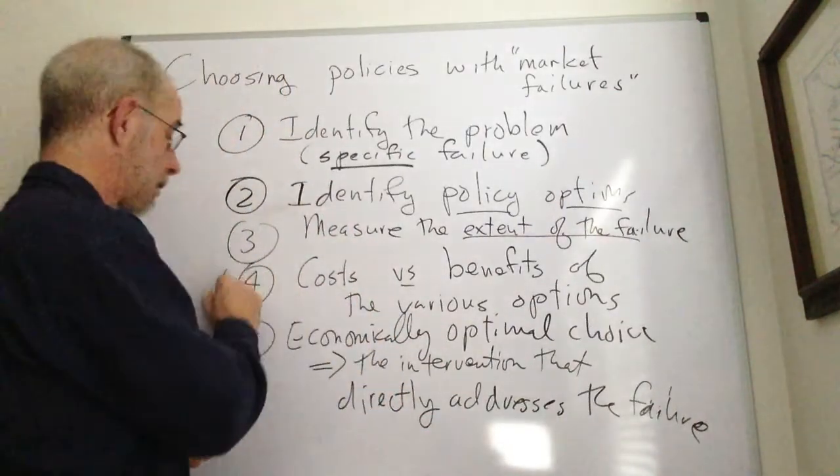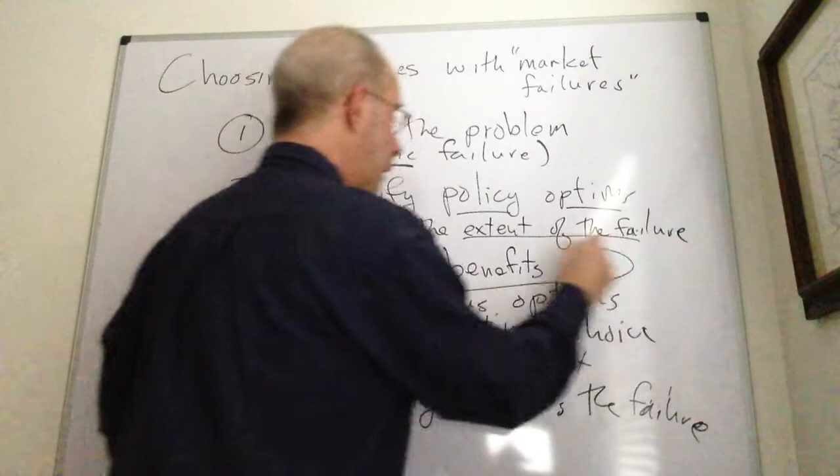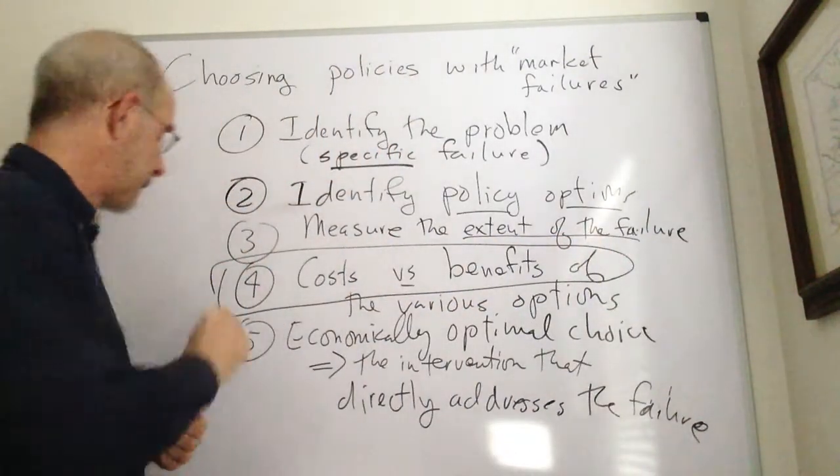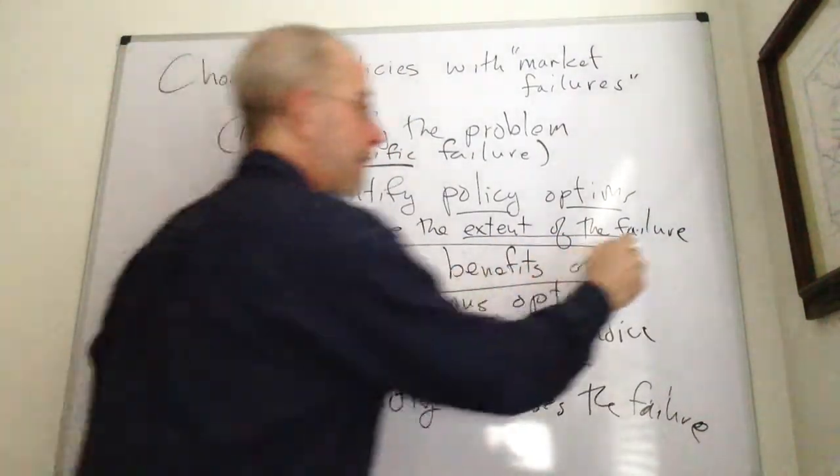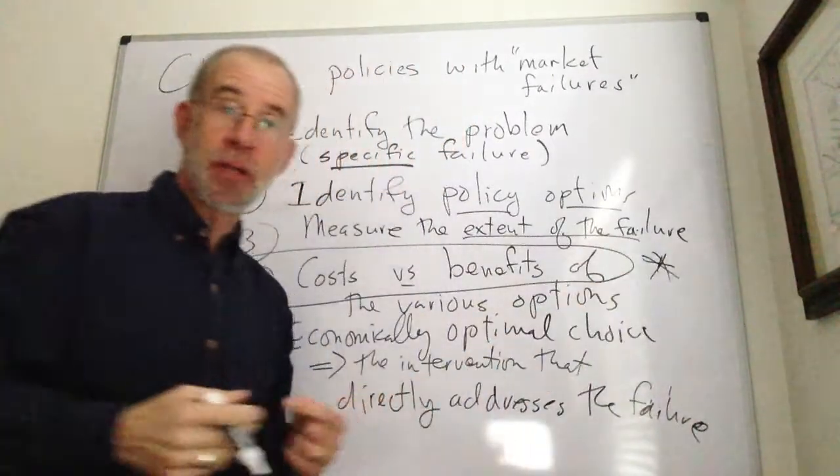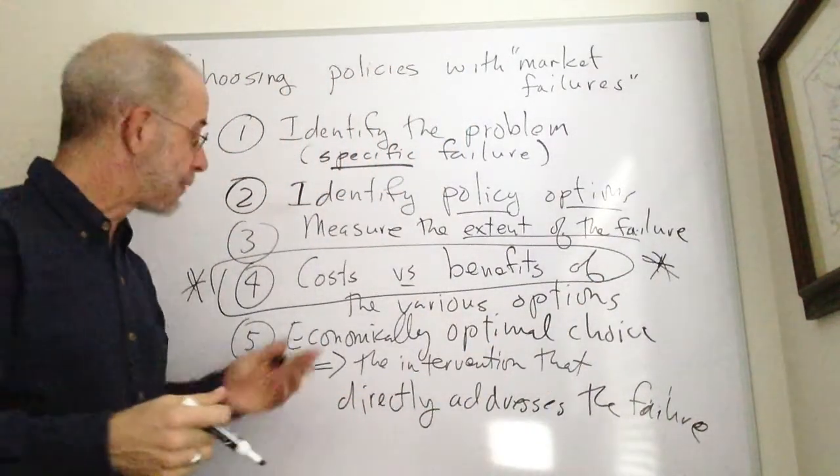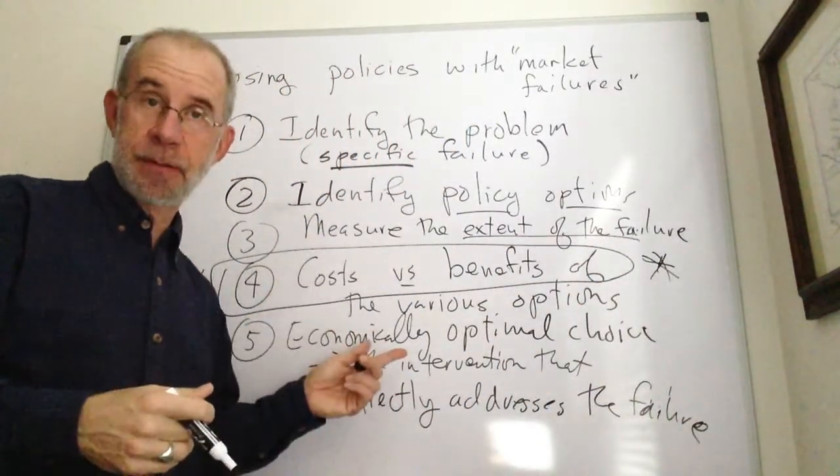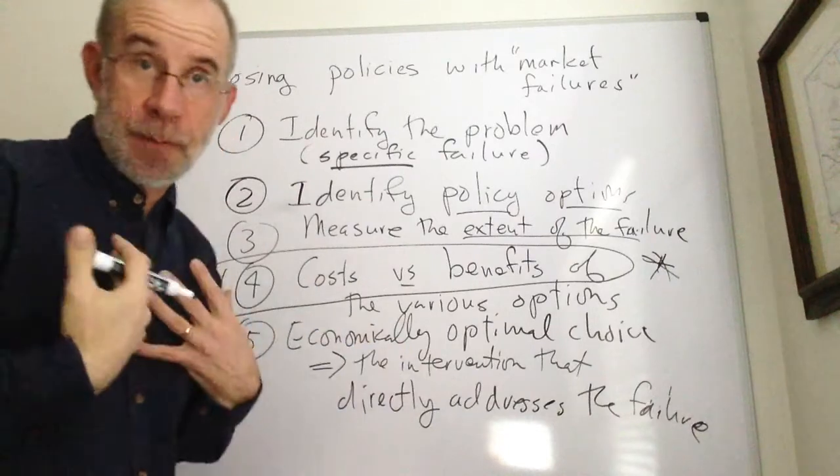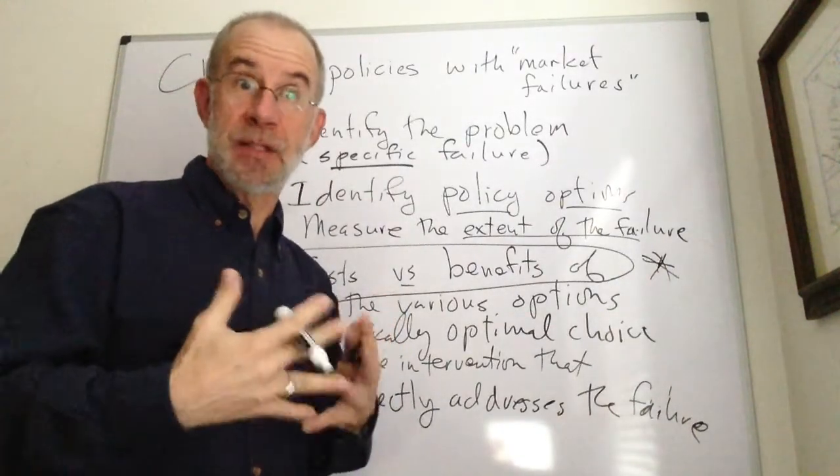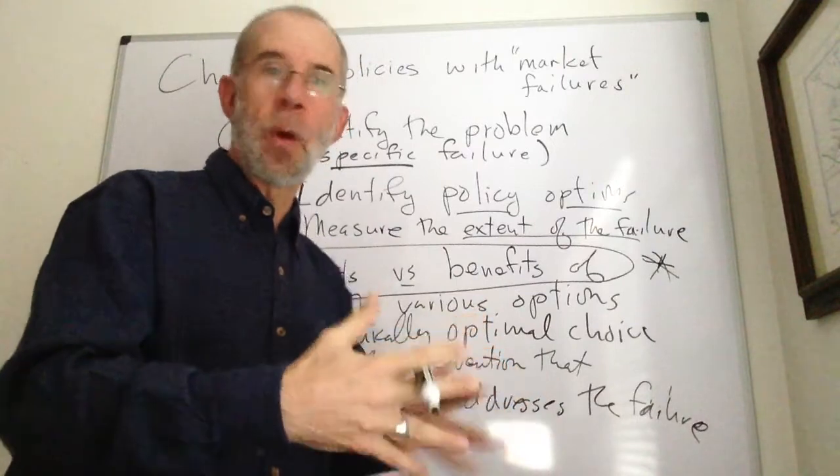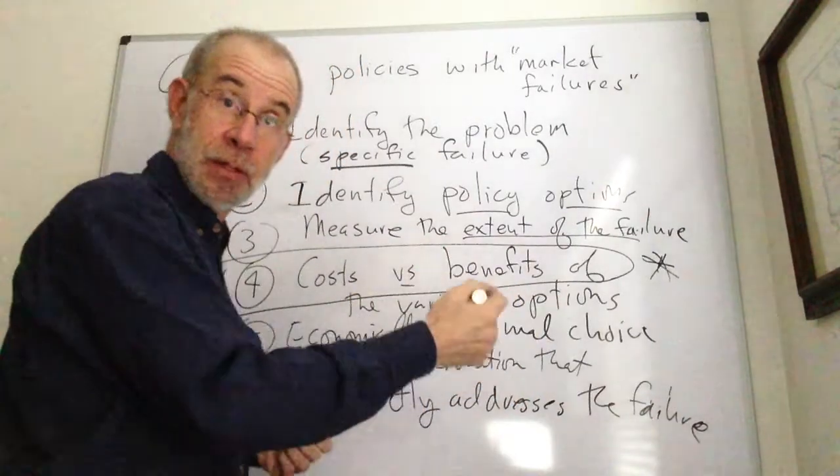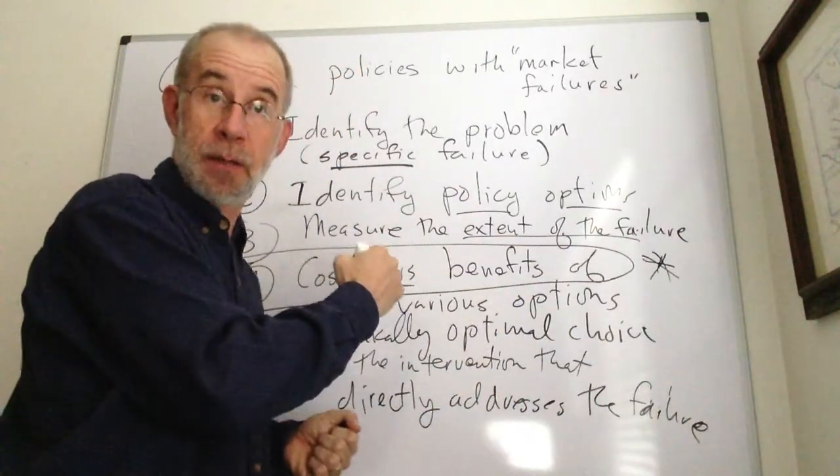And in particular, you could quite possibly have an intervention that generates more costs than benefits. It's not enough, at least from an economist standpoint, to simply say we've got a problem, let's do something. Well, that may get you the benefits of the intervention, but there are going to be associated costs.